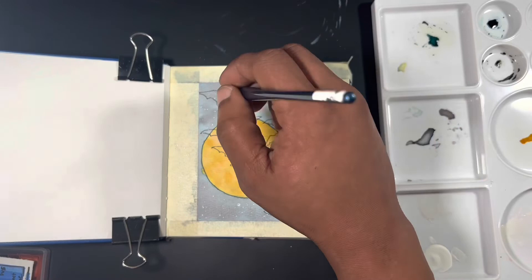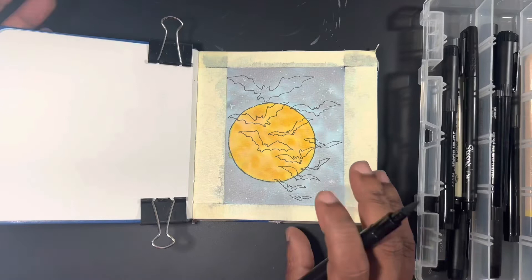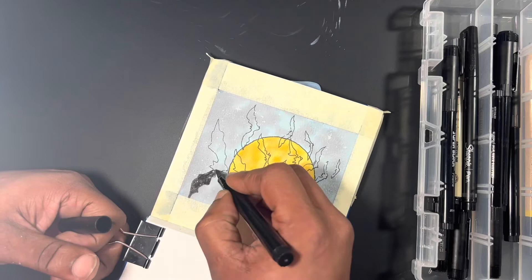You saw me use a brush there to dab a couple of bright stars into the sky, and now I'm going back to those fine line markers that I used to originally draw in the sketch, and I'm going to color in my bats.